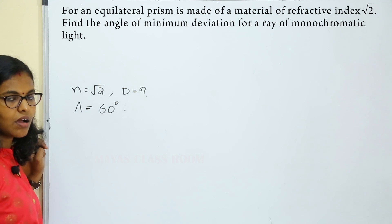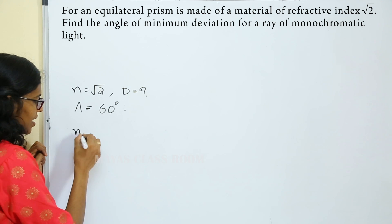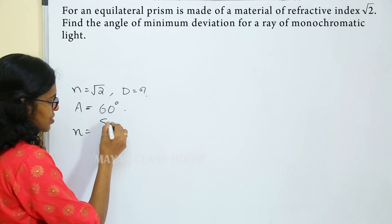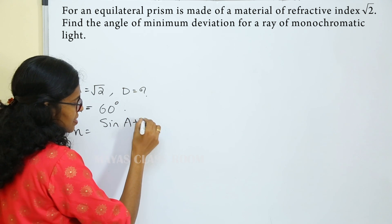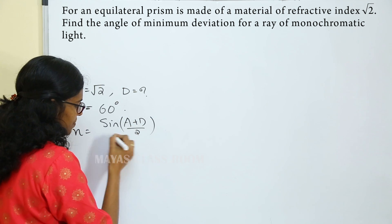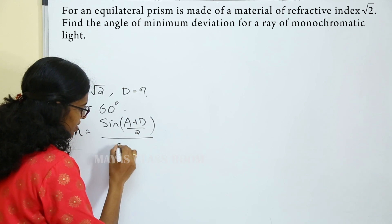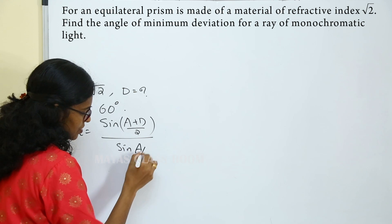We are going to use the formula: n is equal to sine of (A plus D) divided by 2, all divided by sine of A by 2.